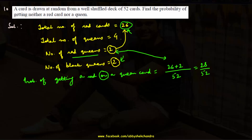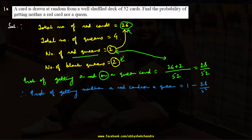Therefore probability of getting neither a red card nor a queen = 1 − 28/52 = 24/52 = 6/13.